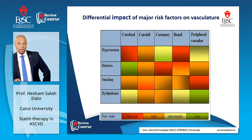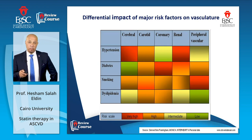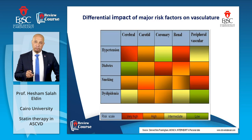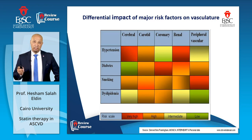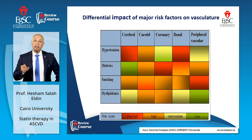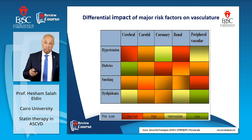This slide shows interesting data. Although it's a vascular tree, the contribution of different risk factors for atherosclerosis differs according to the site of the vascular bed. For instance, dyslipidemia is an important contributor and major risk factor for carotid as well as coronary artery disease. It may not be as important for peripheral vascular disease, but triglycerides are important. Hypertension is a very impressive risk factor for carotid atherosclerosis and ischemic strokes.